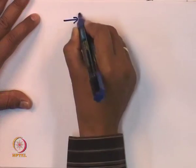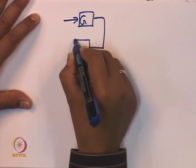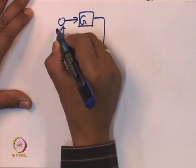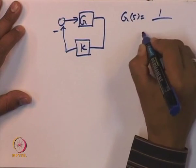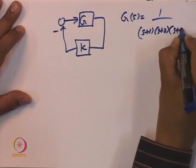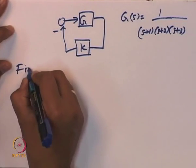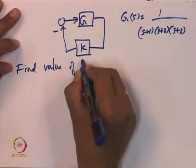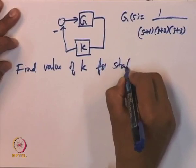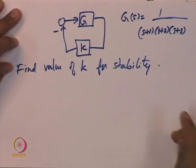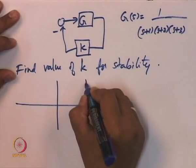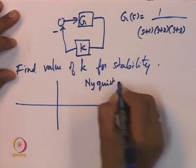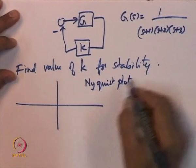We will first calculate for a linear time invariant system with G(s) = 1 / ((s+1)(s+2)(s+3)): find the value of k for stability. What one can do is plot the Nyquist plot of G. The Nyquist plot of G with negative unity feedback — depending on the number of encirclements of the point minus 1 — gives information about whether the closed loop is stable.